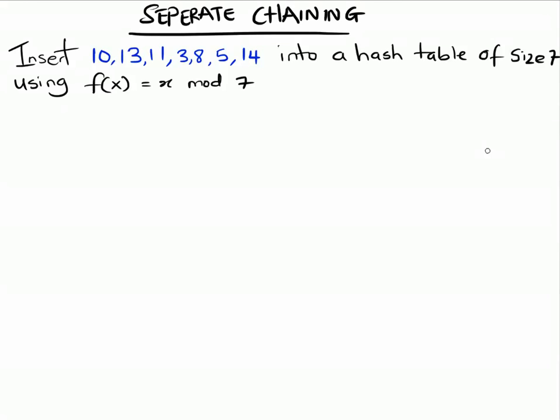Hello everyone, welcome to Crash Code. Today we're going to be learning about separate chaining and how to use it to resolve collisions in hash tables. Right in front of us we have the same numbers we used in the previous videos and the same functions.